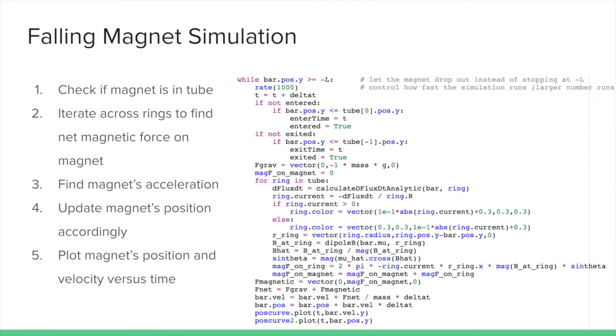Summing this with gravity, we can use Newton's second law to find the magnet's acceleration. Then we update the magnet's position accordingly. The last step in the loop consists of plotting the magnet's position and velocity at that moment in time.